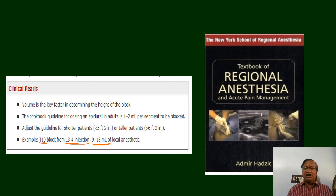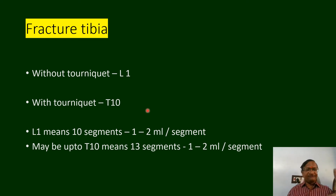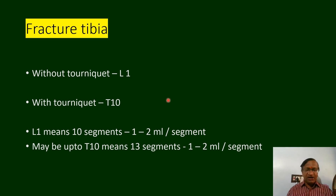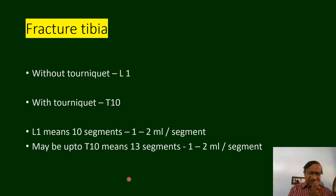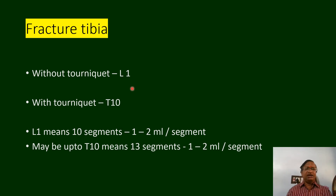For a fractured tibia with tourniquet, the level needed is T10; without tourniquet, L1 is enough. L1 means 5 lumbar plus 5 sacral segments — 10 segments to block; at 1 ml per segment, approximately 10 ml is needed. If you want to give anesthesia, use 0.5%; for analgesia, come down on concentration, not on volume. To reach the required height you need an adequate volume, regardless of tourniquet use.